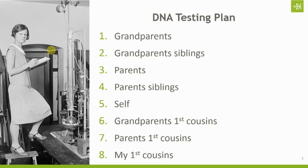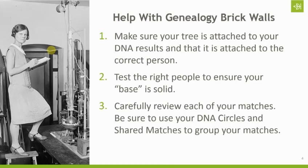Here is a basic DNA testing plan. I would always recommend testing the oldest living generation first — whether that's grandparents, great-grandparents, or siblings of grandparents, then parents, then siblings, and then yourself. Most of you have probably tested yourself first, and that's okay — you can go back and work through this plan. Then if your grandparents or parents have any first cousins, you'll want to test them. The goal is to build a solid base so you know you're connected genetically to all of your great-grandparents.